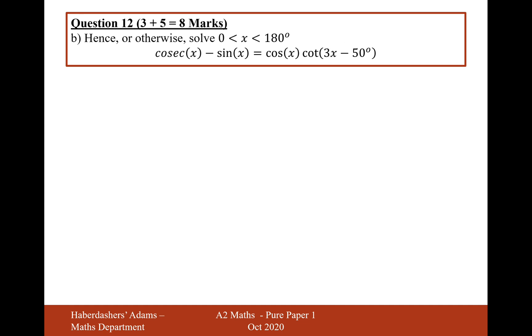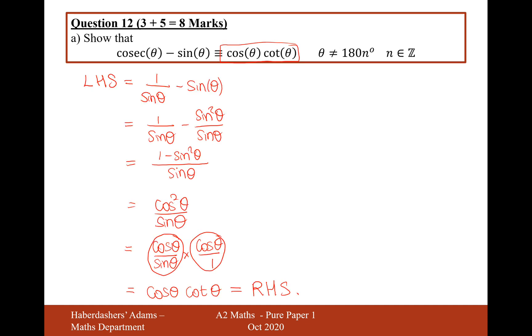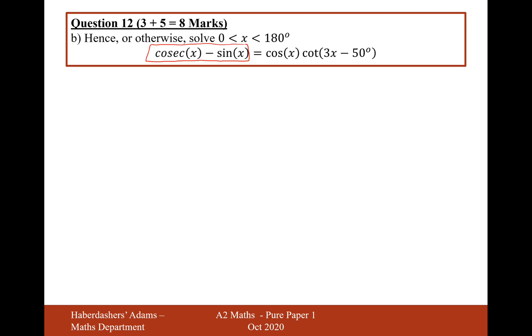And then this other strange angle here. So what I think I'll do is replace this left hand side with the right hand side of this trig identity here. So it's now going to be cos x cot x equals cos x cot 3x minus 50.